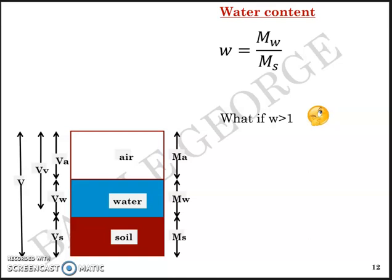Water content can be greater than 100%. For example, if you take 2 kg of soil from the field, dry it in an oven, and find that more than 1 kg has evaporated, leaving only 900 g of solids, then 1.1 kg of water was present out of the original 2 kg. This means more than 50% of the total matrix was water, giving a water content greater than 100%.